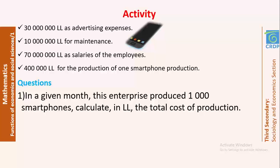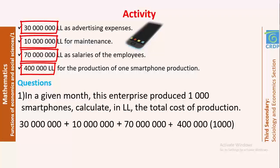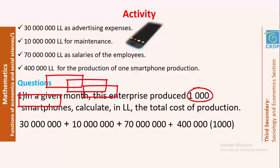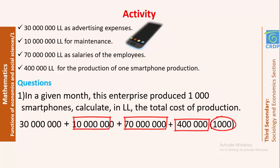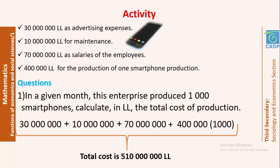In the first question, in a given month, this enterprise produced 1,000 smartphones. Calculate in Lebanese lira the total cost of production. In order to find the total cost of production, I must add all types of expenses for this enterprise, even the ones that are not depending on the number of items produced. The expenses of production of one smartphone must be repeated 1,000 times, so I multiply it by 1,000. Adding 400,000 multiplied by 1,000 — where 400,000 is the price of production of one smartphone and 1,000 is the number of produced smartphones — the total cost of production of 1,000 smartphones will be 510 million Lebanese lira.